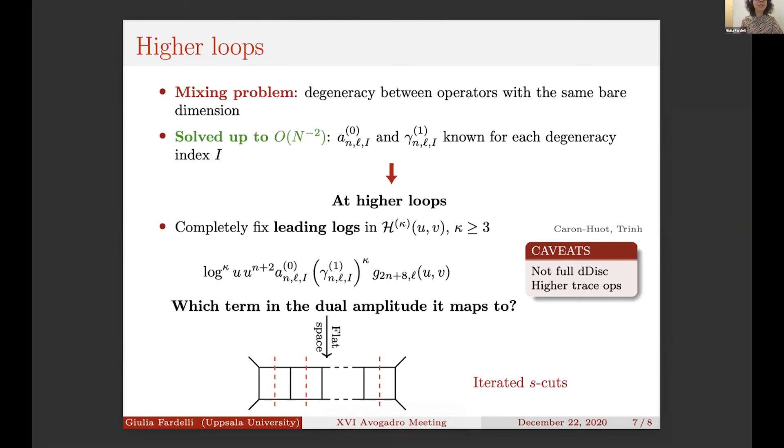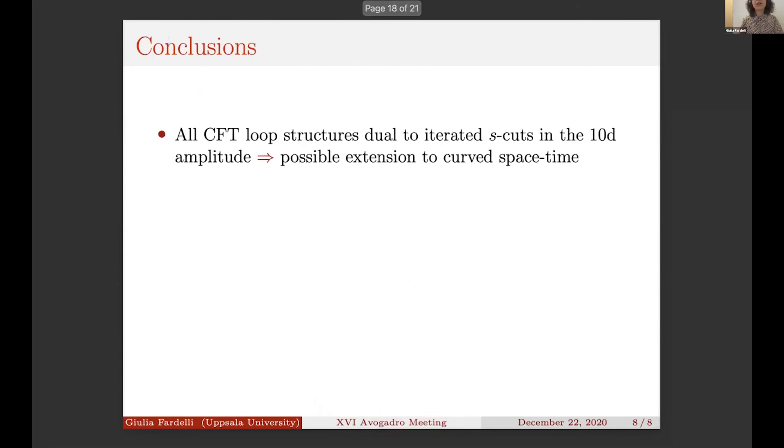We unveiled the connection between the logarithmic singularity in CFT correlation functions and some singularity in the amplitude side. One can think of really understanding this connection, because once we know which part of the correlator we can reconstruct and which part of the amplitude we can reconstruct, it will be possible to extend all this reasoning to curved spacetime. As I was mentioning before, we obtained similar results with a very similar interpretation also in Mellin space.